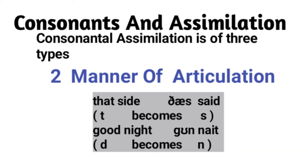The second type of consonantal assimilation is manner of articulation. What happens here is two sounds become similar in terms of manner of articulation — one at the end of a word, and another at the start of another word. For example, 'that side' becomes 'thas side' — T becomes S.